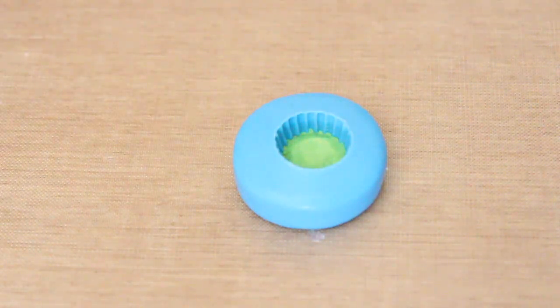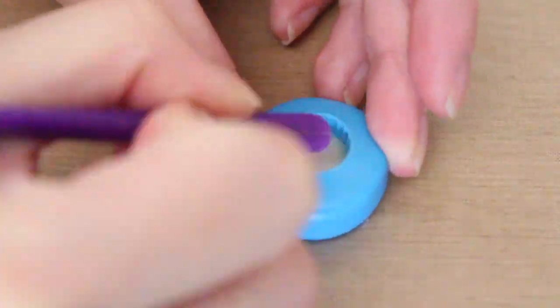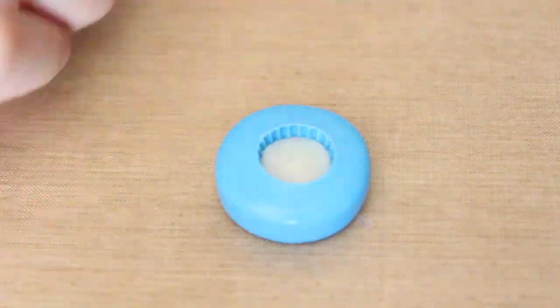And then after that we're going to add some translucent clay. This is for the white rind of the watermelon. And again, you only want about a third or a fourth into your cupcake mold.